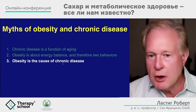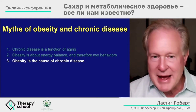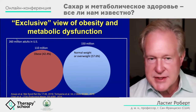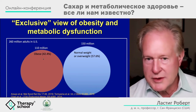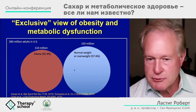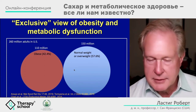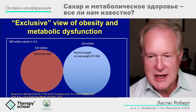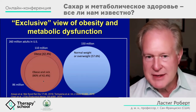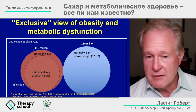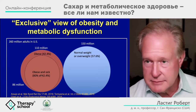Myth number three: obesity is the cause of chronic diseases — if you don't get fat, you don't get sick. Here is a Venn diagram of the United States population: 42.4% obese (BMI over 30), 57.6% normal weight (BMI under 30). The standard thinking from doctors, nutritionists, and the food industry is that 80% of obese individuals — about 86 million people — are sick because they're fat.